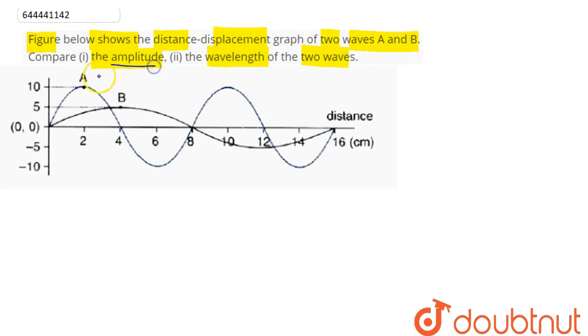Amplitude of A to amplitude of B - we can say the ratio of amplitude of A to amplitude of B can be written as: from the diagram we can see amplitude of A